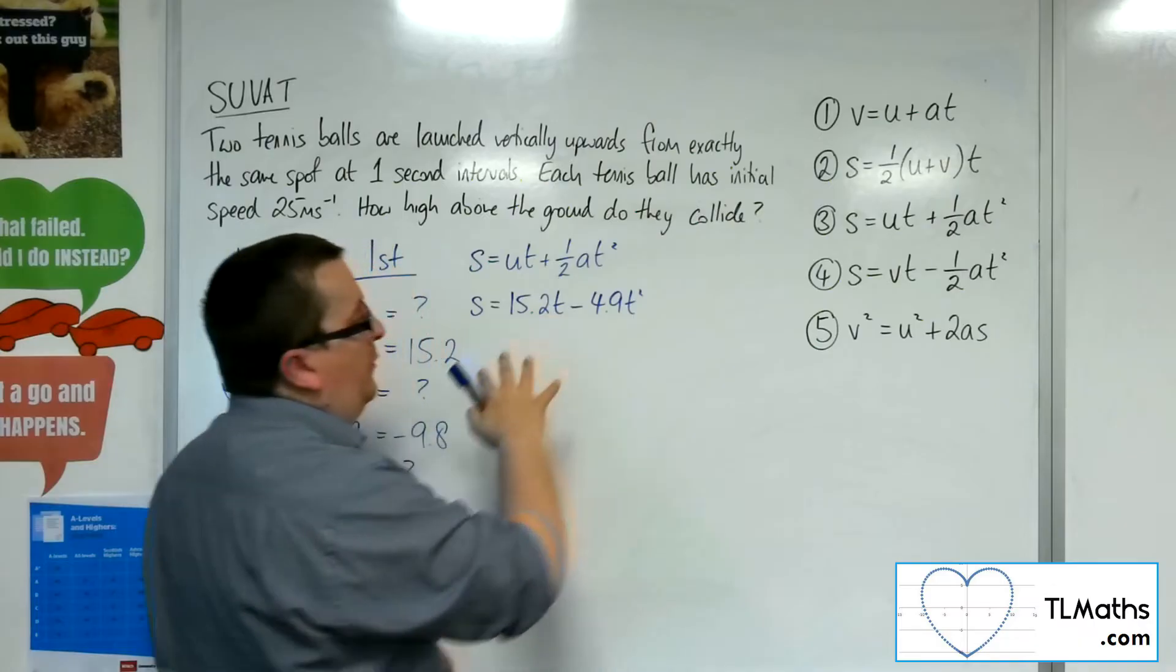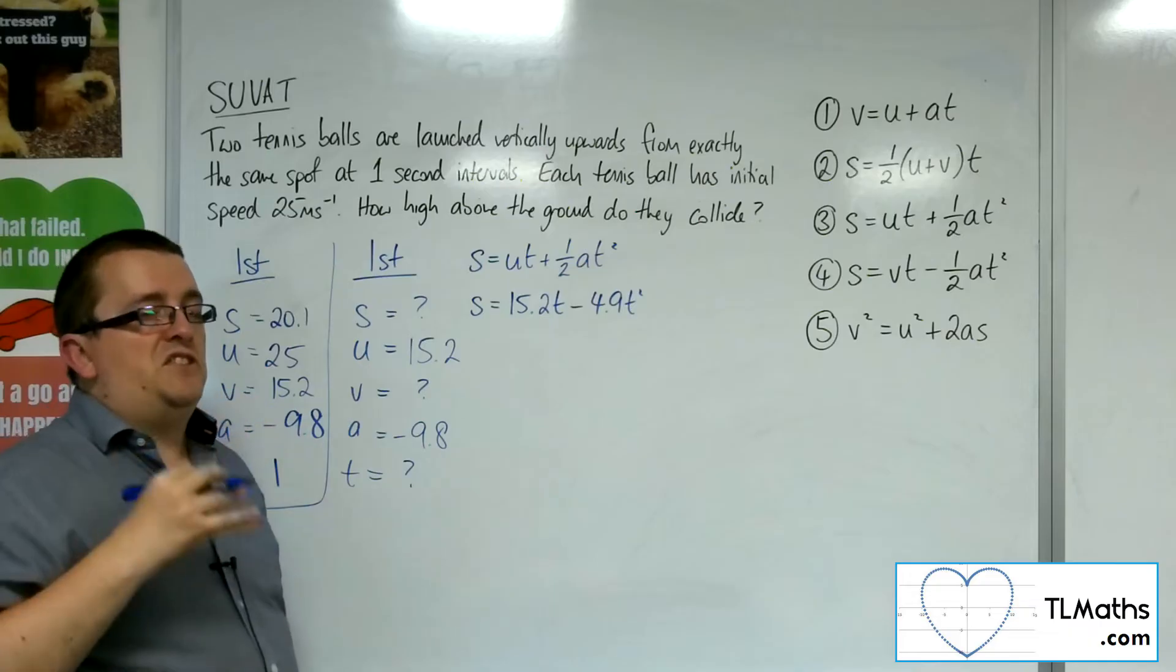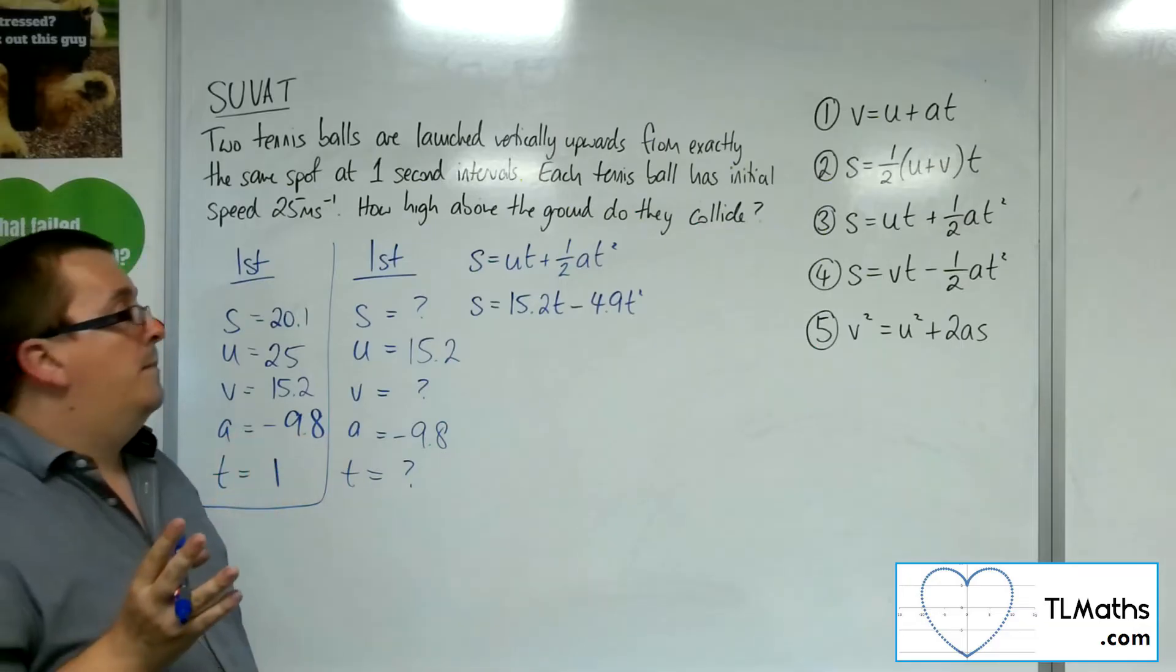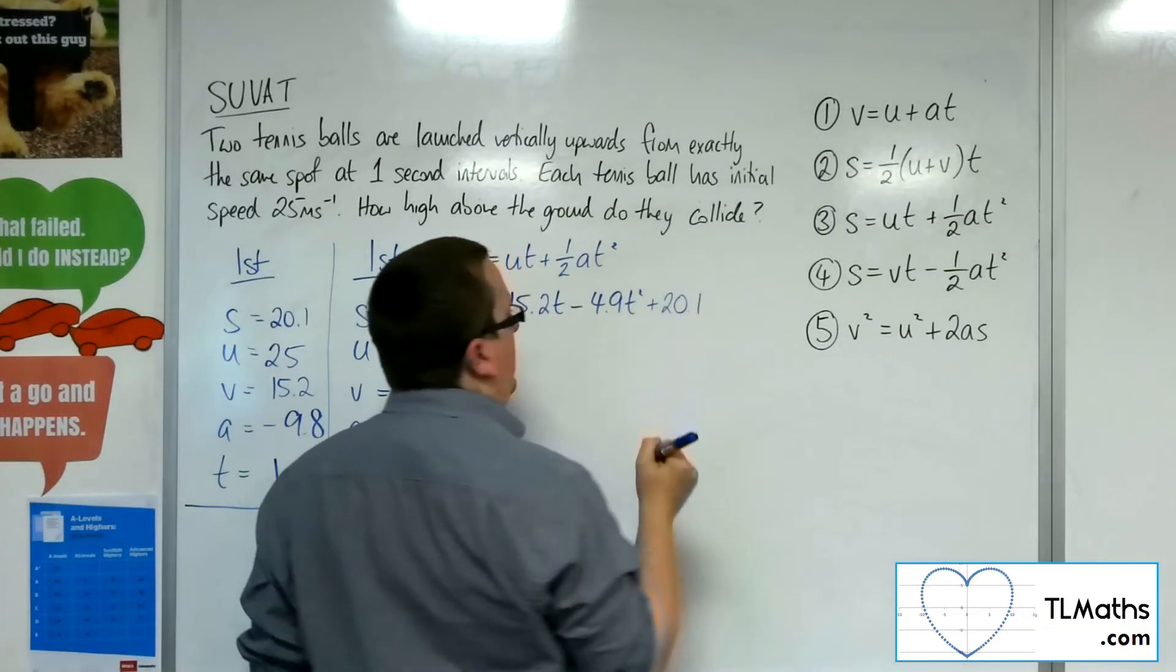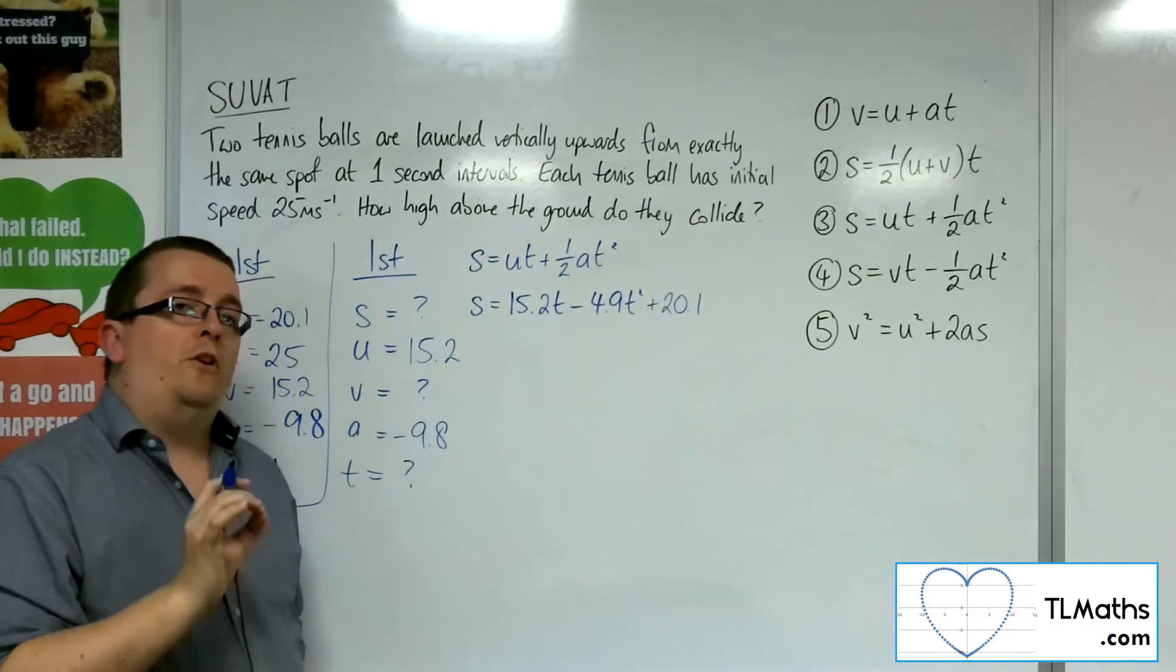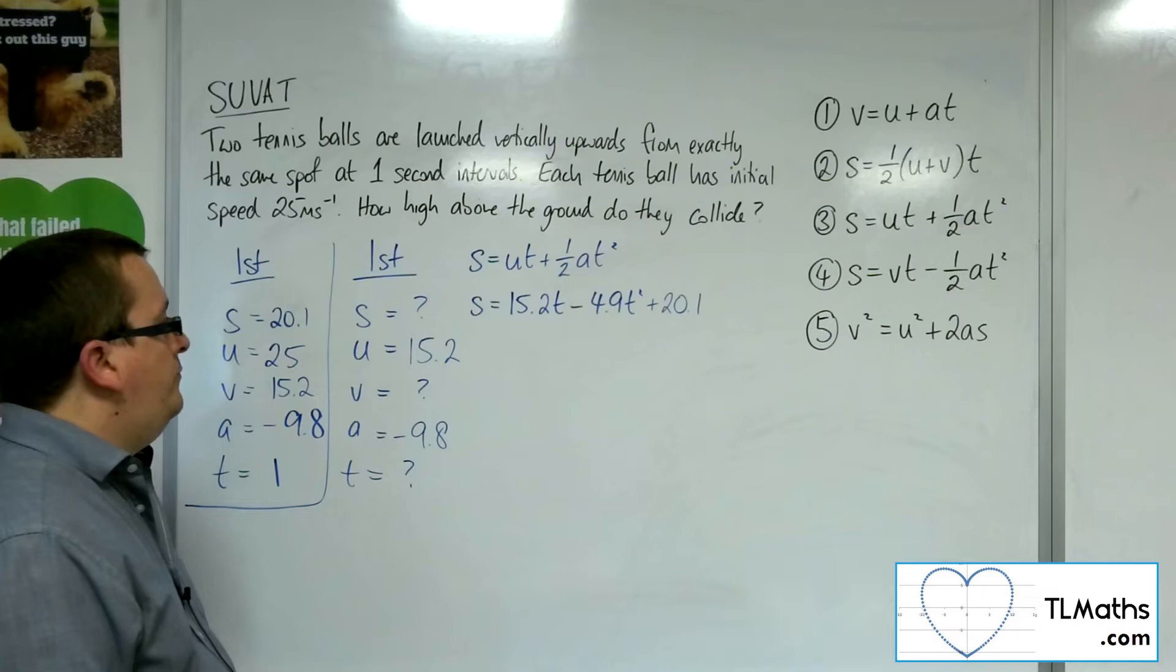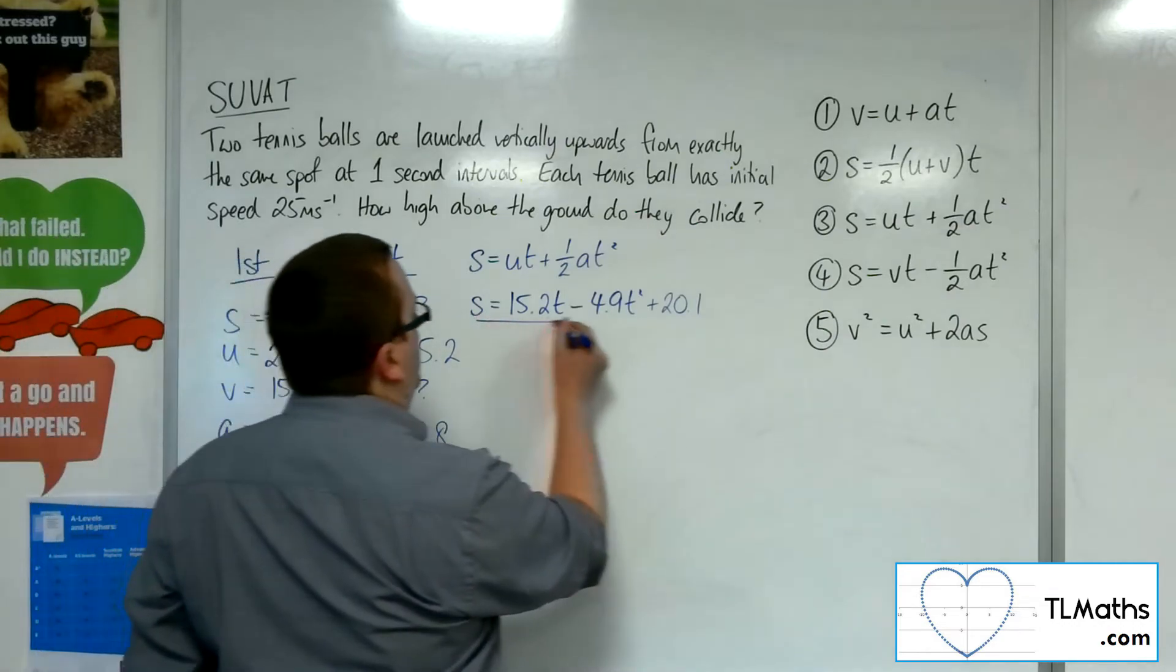So we've got S equals UT plus half AT squared. So we've got S equals U, 15.2 times T, plus half times A, so minus 4.9 T squared. Now, that is the displacement of the particle as if it's starting from the origin. We know it's not starting from the origin. We know it's starting 20.1 metres high, and so we're going to add an extra 20.1 onto that. That will give me an equation for the displacement of this particle relative to the other particle that we're going to look at, that second particle.